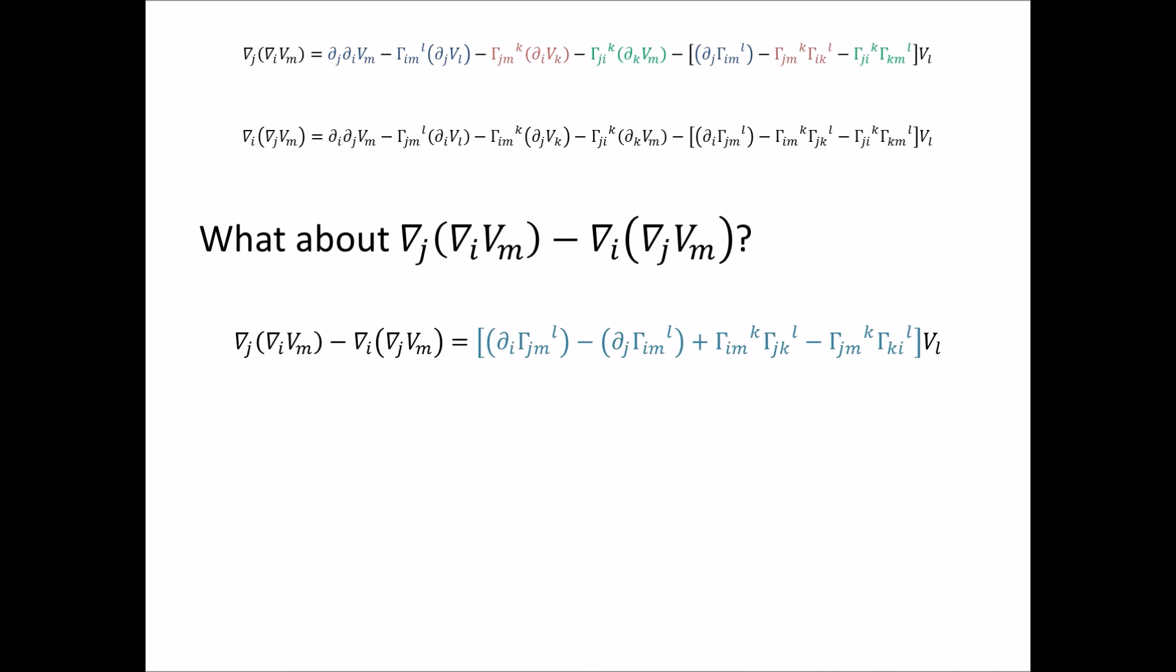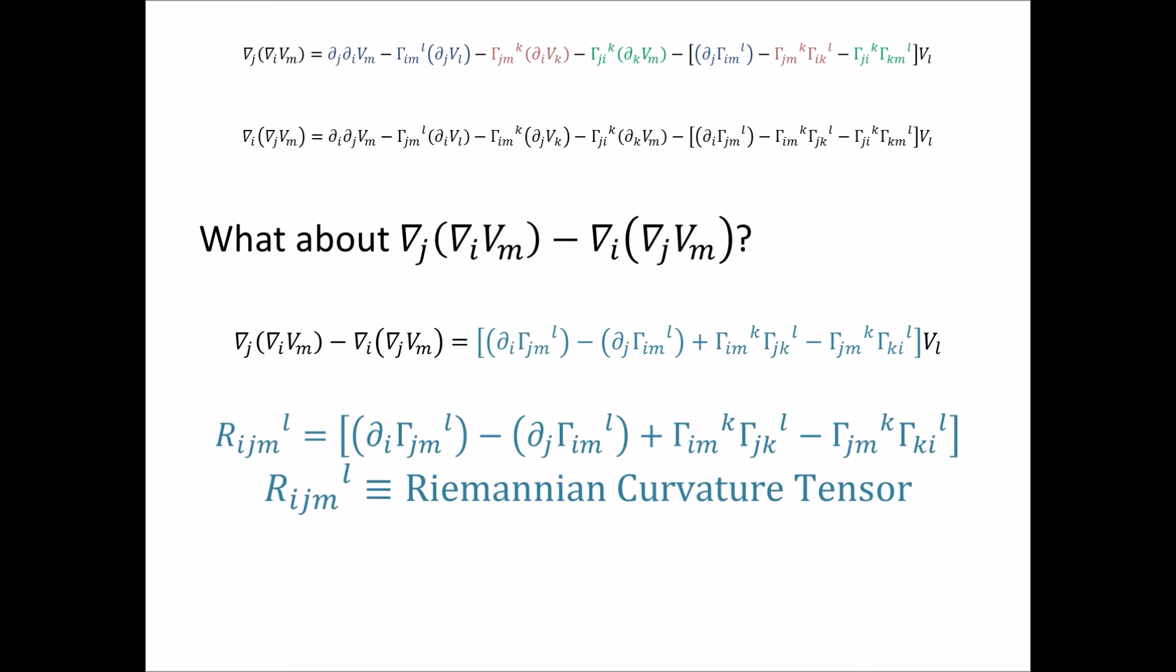You see this thing that we're multiplying by is the Riemannian curvature tensor. It has three covariant, well it doesn't have to, but in the way that we've carried out our covariant differentiation and the nature of the vector, here this Riemannian curvature tensor has three covariant indices and one contravariant index. And this is the Riemannian curvature tensor.